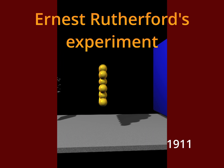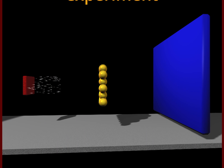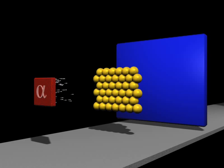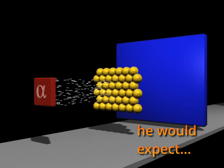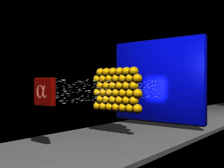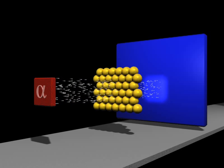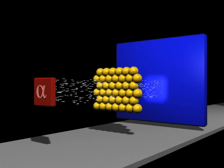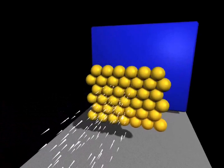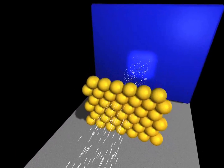He directed a stream of so-called alpha particles onto a thin foil of gold. On the other side, he installed a screen covered with a substance which shines when it is hit by an alpha particle. According to the Thomson model of the atom, all alpha particles, without any difficulties, should go through the gold foil and then hit the screen. So one would expect that the screen would shine.